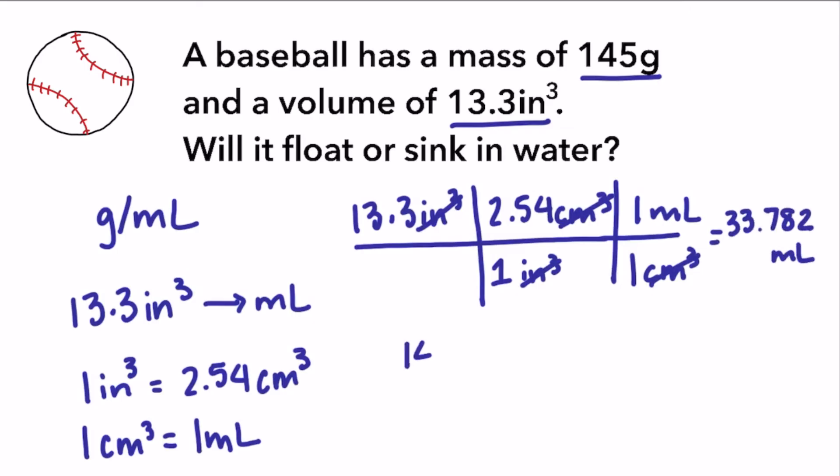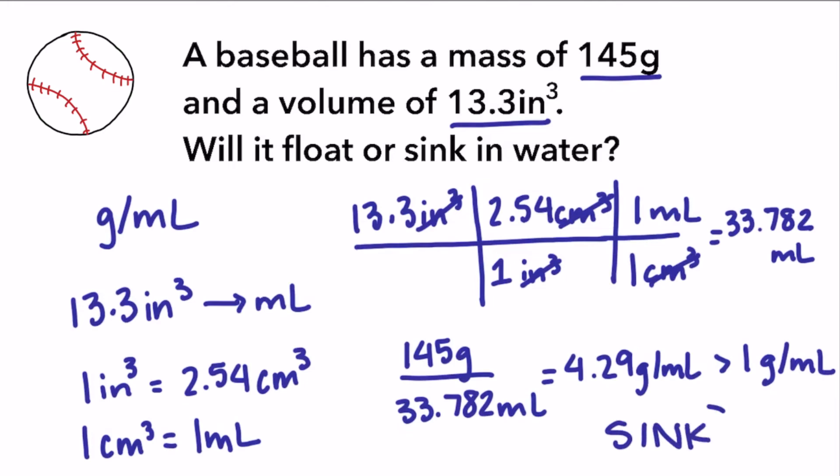If we divide the mass, 145 grams, by that volume, we calculate the density of the baseball to be 4.29 grams per milliliter. This is greater than the density of water, so the baseball would sink.